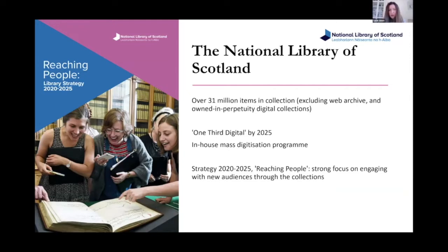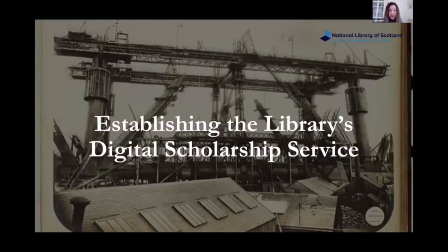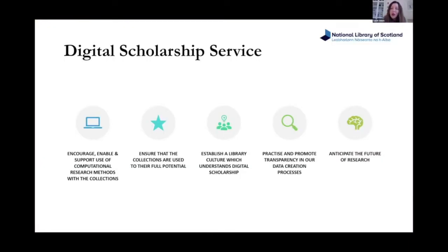Our digital scholarship service was set up in 2019 with five main objectives. The first is enabling the use of computational research methods with the collections — making collections available in machine-readable format as data. The second is making sure the collections are used to their full potential for both analogue and digital research. The third, a more challenging internal objective, is establishing a culture within the library that understands and is equipped to support digital scholarship, through training opportunities and talks.